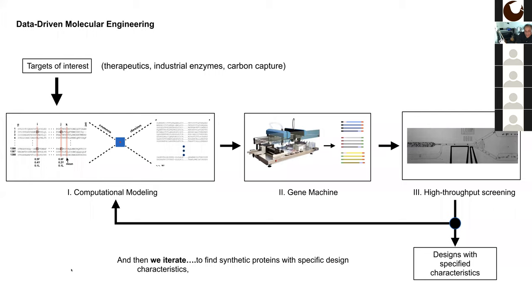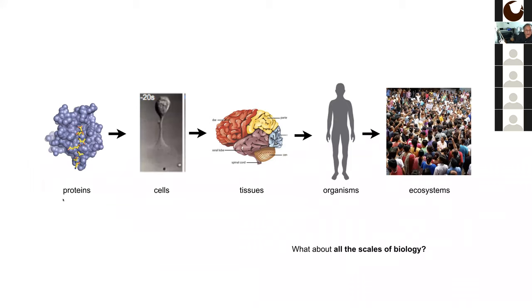That's the story of proteins and how models for them can be learned. But I want to go back to the problem I set up at the beginning: what about all these scales? How are we going to address models for how biology works at the level of cells, tissues like the brain, whole organisms, and ultimately ecosystems? We think about ecosystems in many ways — many of you have heard about microbiomes, how important communities of bacteria are in doing complex reactions. We'd like to have models for things across all these scales, and demonstrate that by analysis and design, just as we've done for protein molecules.